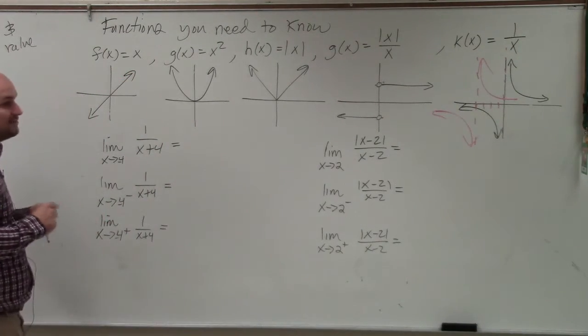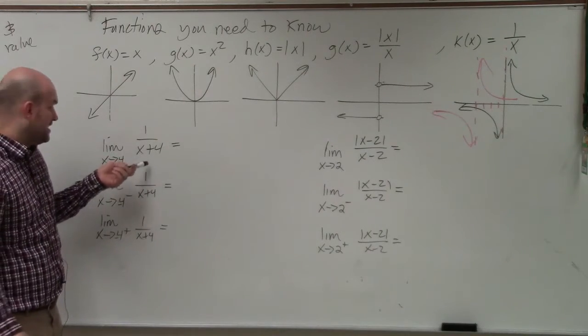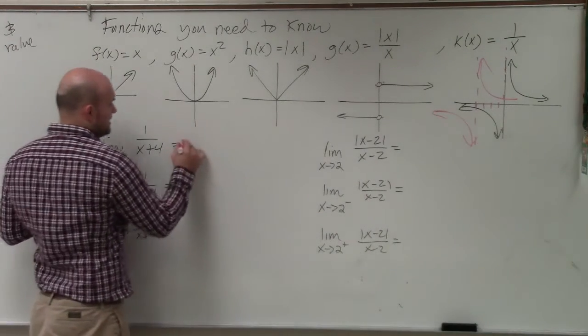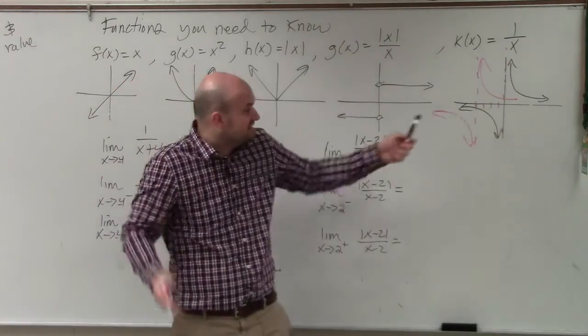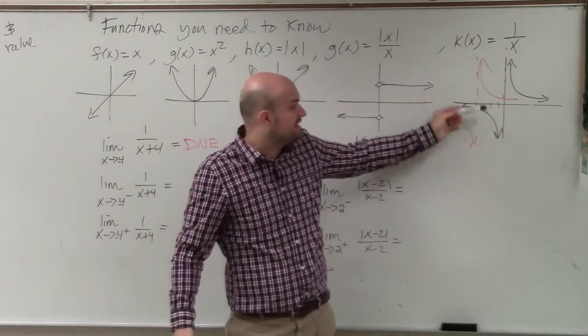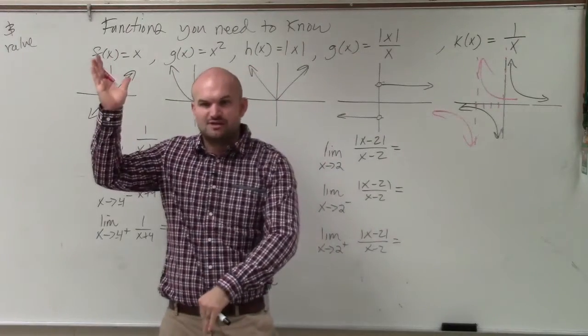So when we evaluate at x equals negative 4, we know we have a discontinuity. So at negative 4, that does not exist. And you can look at that graph. We know it doesn't exist because the left-hand and the right-hand limit go in opposite directions.